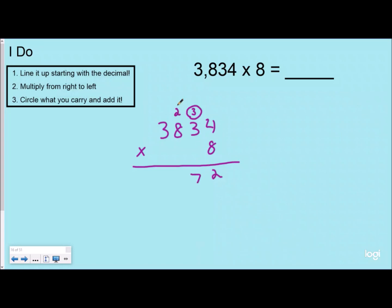Eight times 8 is 64 plus 2 is 66, so I'm going to regroup my 6 tens, or 6 groups of a thousand really, over my thousands place.